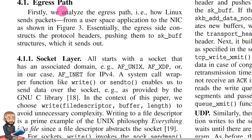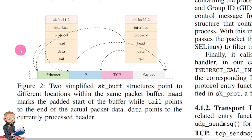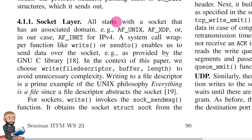I still like the order we've gone in. First we analyze the egress path, that is, how Linux sends packets from a user space app to the NIC as shown in figure 3. Essentially, the egress side constructs the protocol headers, pushing them to skbuf structures, which it sends out. In terms of the socket layer, all starts with a socket that has an associated domain, for example AF_UNIX — address family. This refers to a specific communication protocol used for interprocess communication, IPC, through Unix domain sockets. So IPC communication is different than network communication; these are very different sockets. Thus you see address family Unix versus address family INET, which is for IPv4.